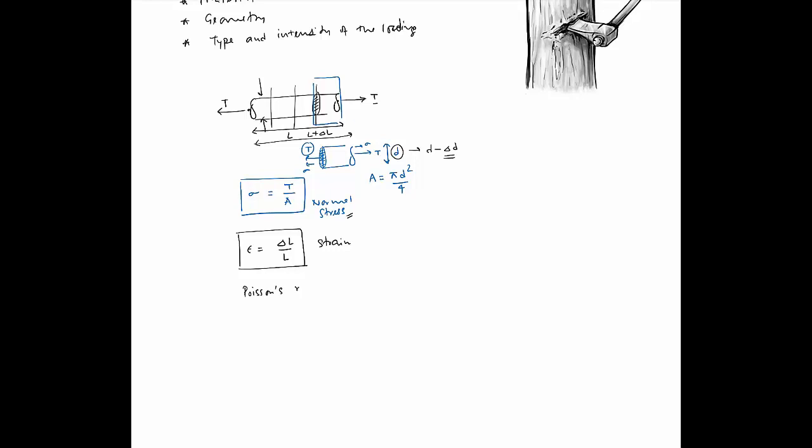Delta D and delta L are related to each other via a quantity called Poisson's ratio. It's written as nu which is given as negative delta D over D divided by delta L over L. The negative sign basically indicates that if delta L is positive, which will be the case if something was elongated, then delta D would have to be negative and vice versa.